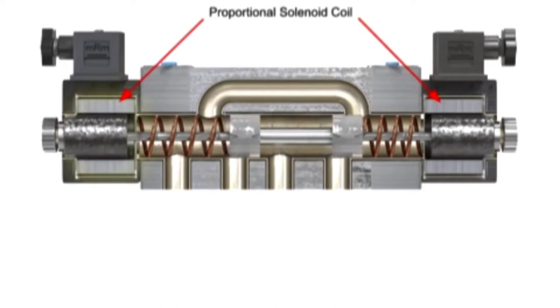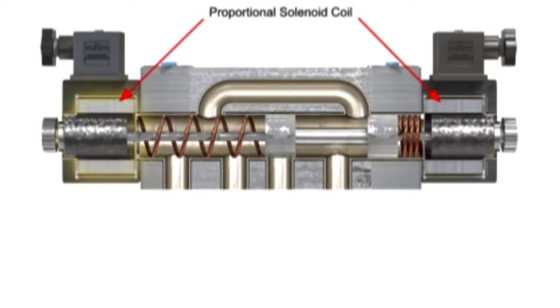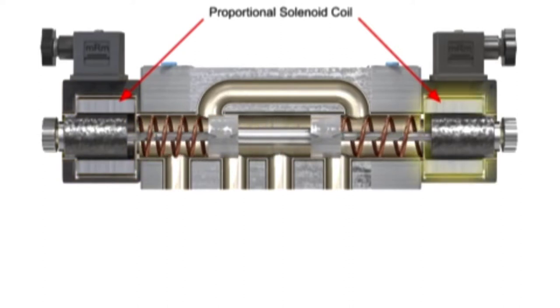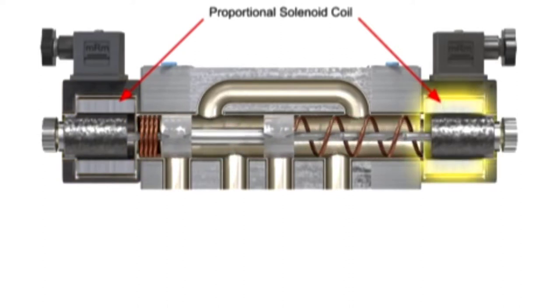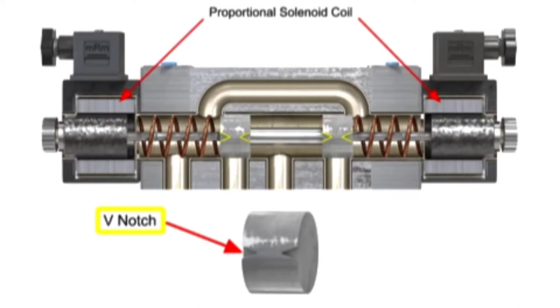As the internal valve spool changes position, new flow areas open up gradually and continue to open wider during full spool travel. To eliminate flow lag from spool overlap, most manufacturers cut V-notches that allow some flow to pass as soon as the spool moves.